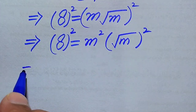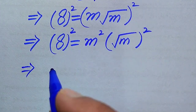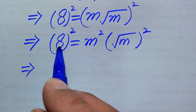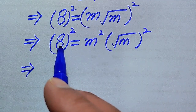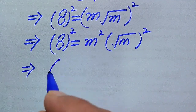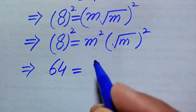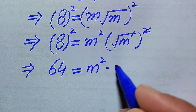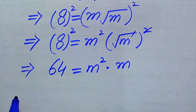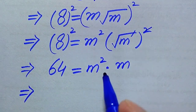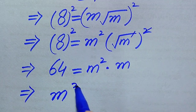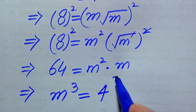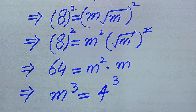In the next step, we have 8 squared. We write 8 squared as 64. On the right side, the square and square root cancel, leaving m squared times m, which equals m cubed. So 64 equals m cubed, and we write 64 as 4 cubed.